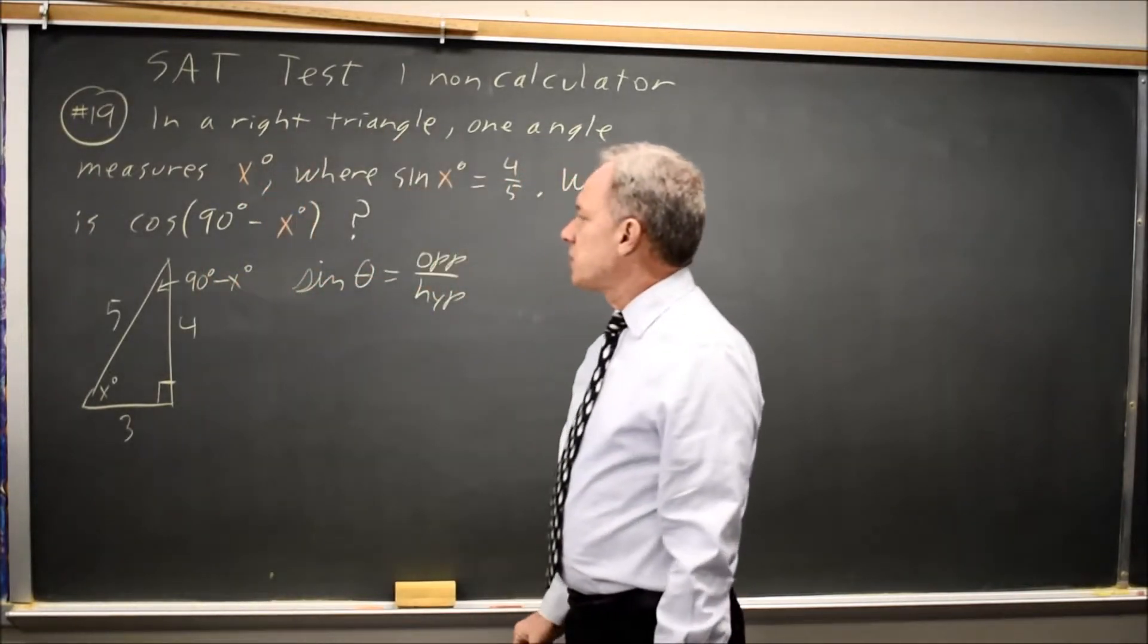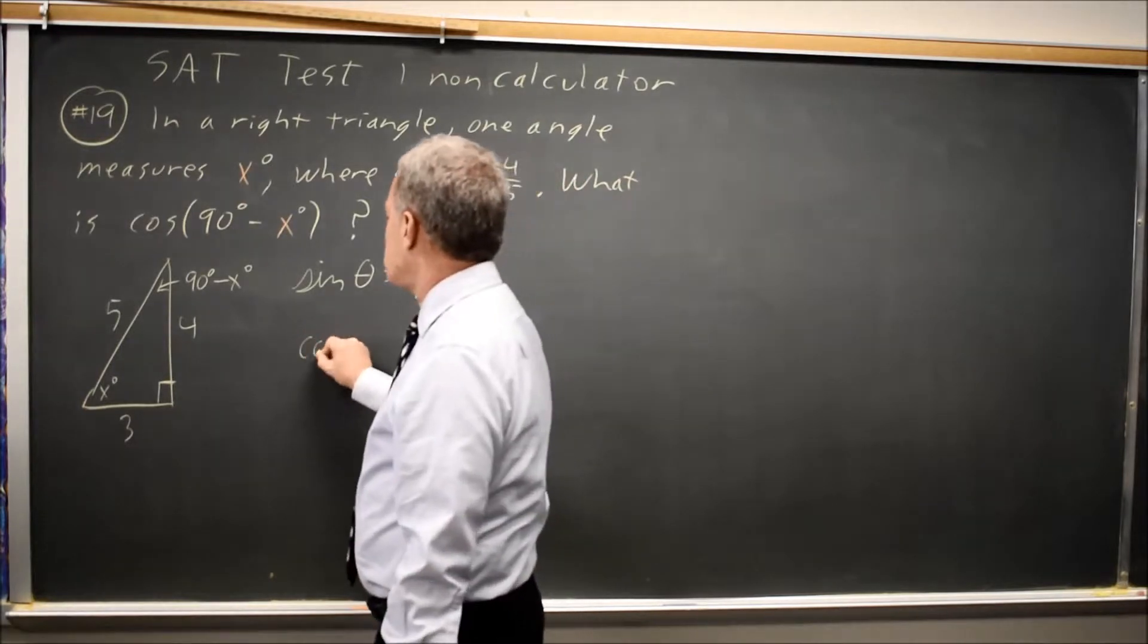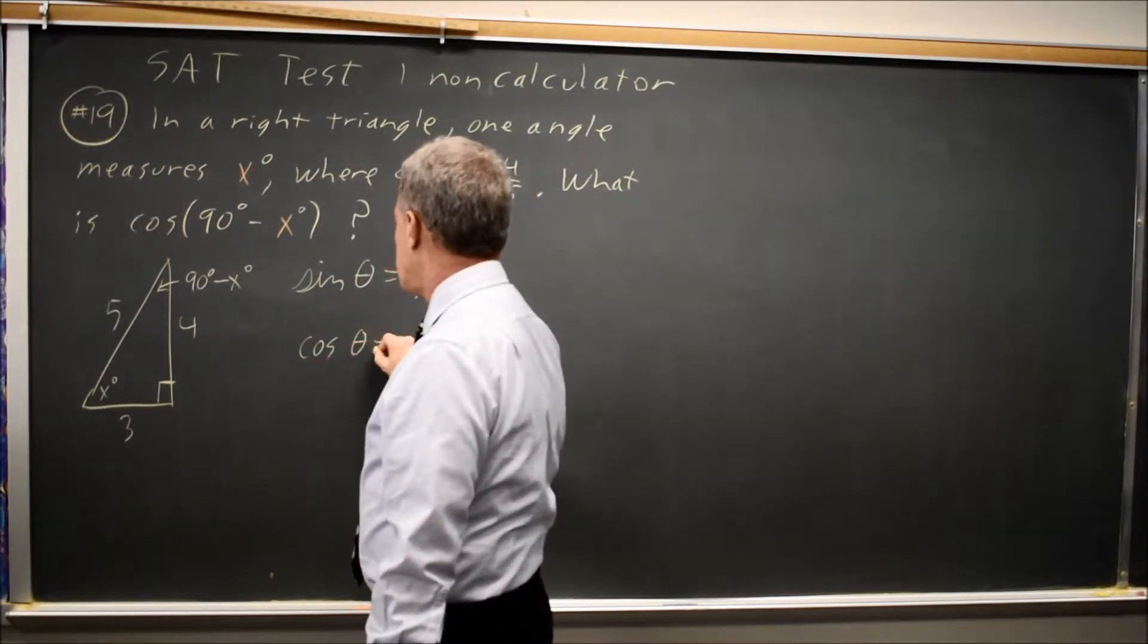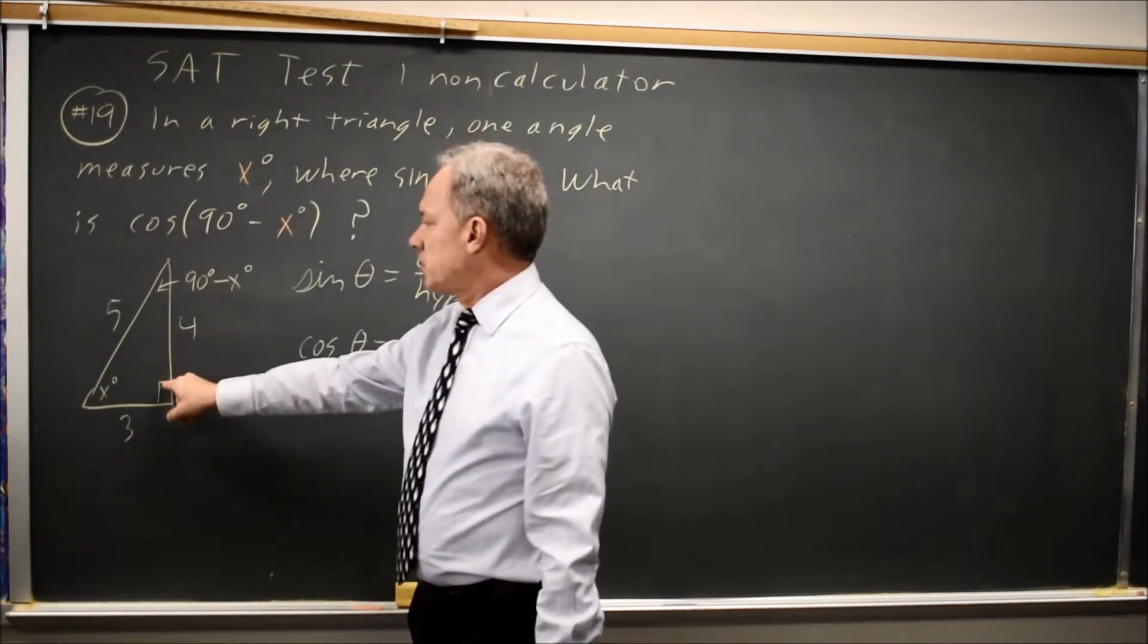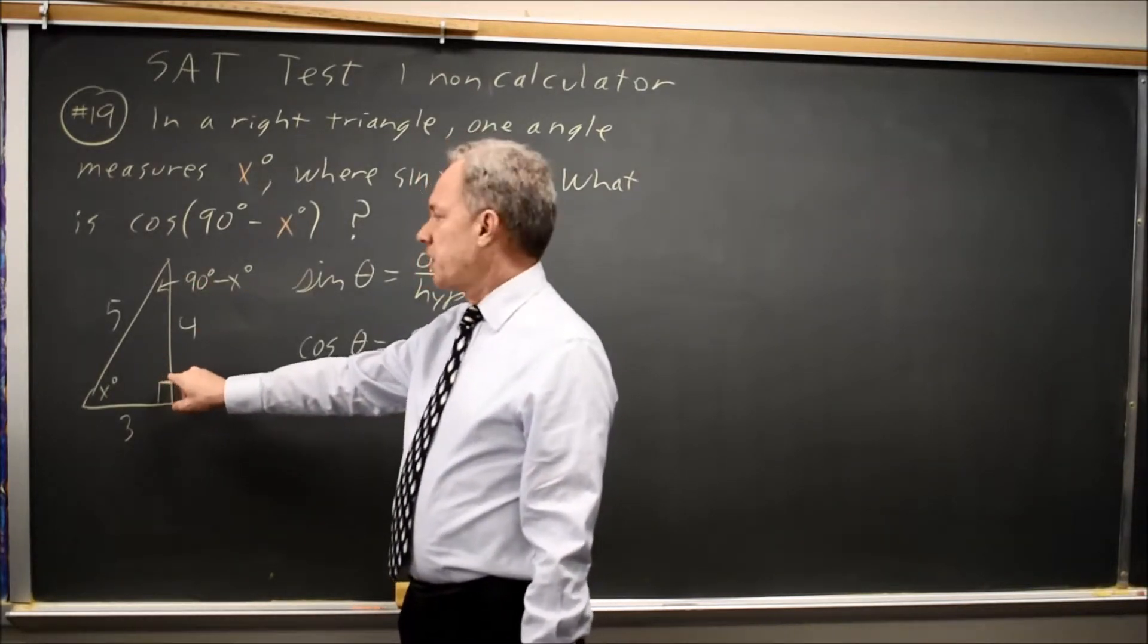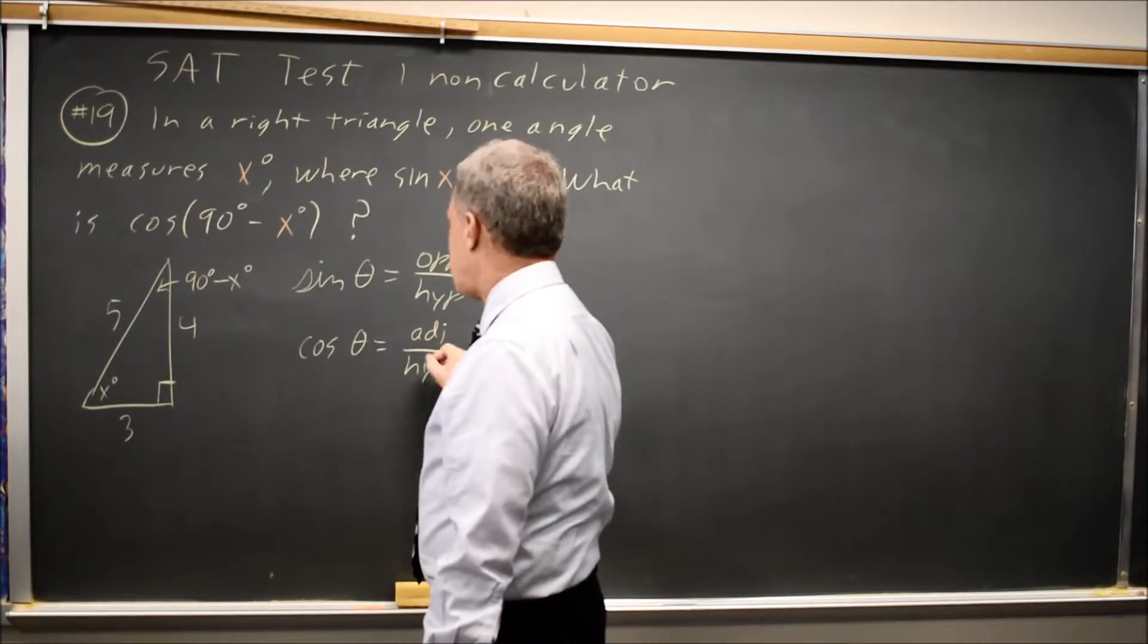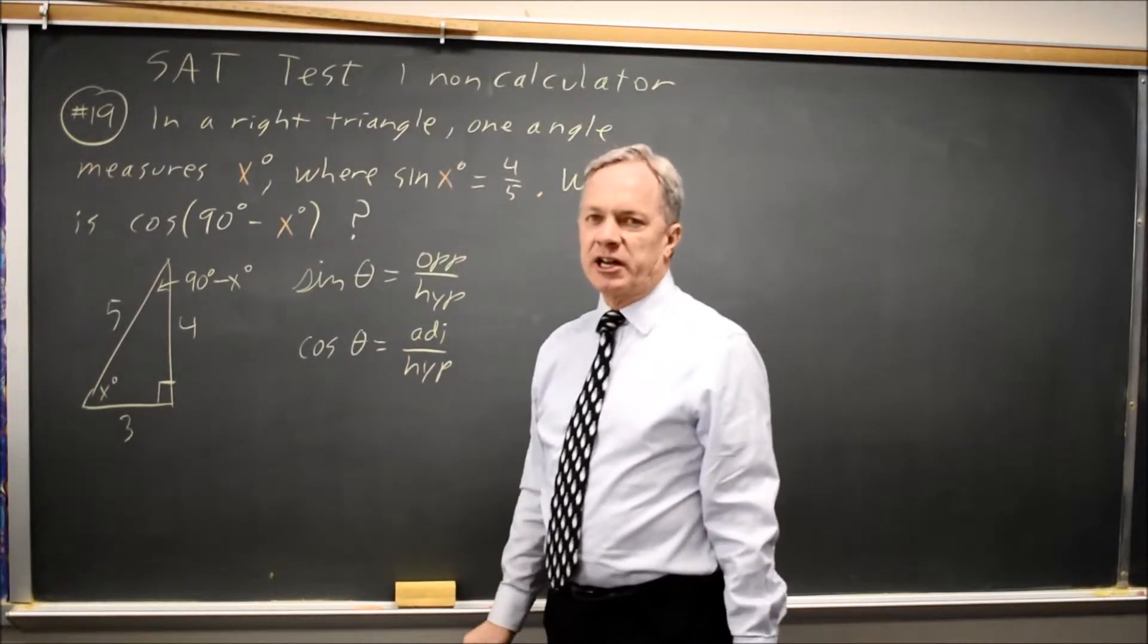And they're asking for the cosine of that angle. The cosine of an angle theta is the adjacent side—the leg that's not a hypotenuse but is touching the angle—divided by the hypotenuse, where the hypotenuse is the side opposite the right angle, or the longest side of a right triangle.